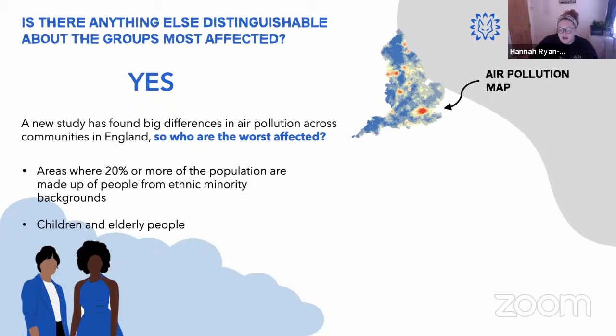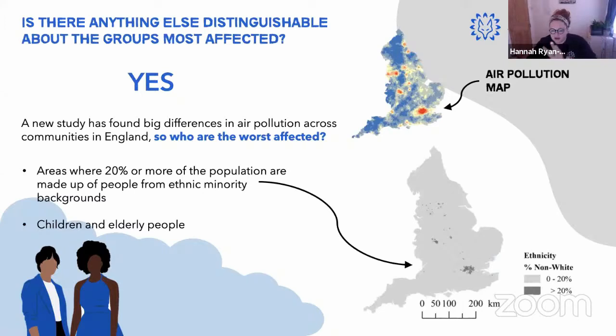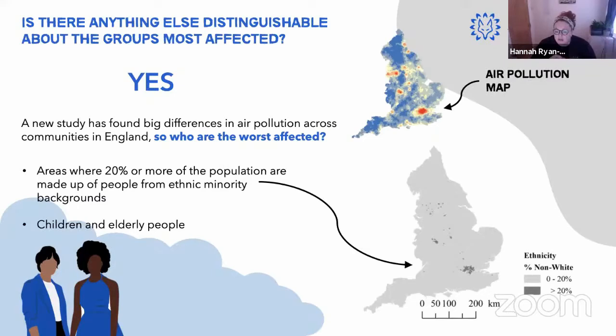This is essentially the same map as before, but now showing community makeup. Light gray areas are mainly white communities; darker gray areas have more than 20% of people from a mix of minority backgrounds. You can see these darker areas line up with where air pollution levels are highest. London has a large population from ethnic minority backgrounds and is an area with worse air pollution.